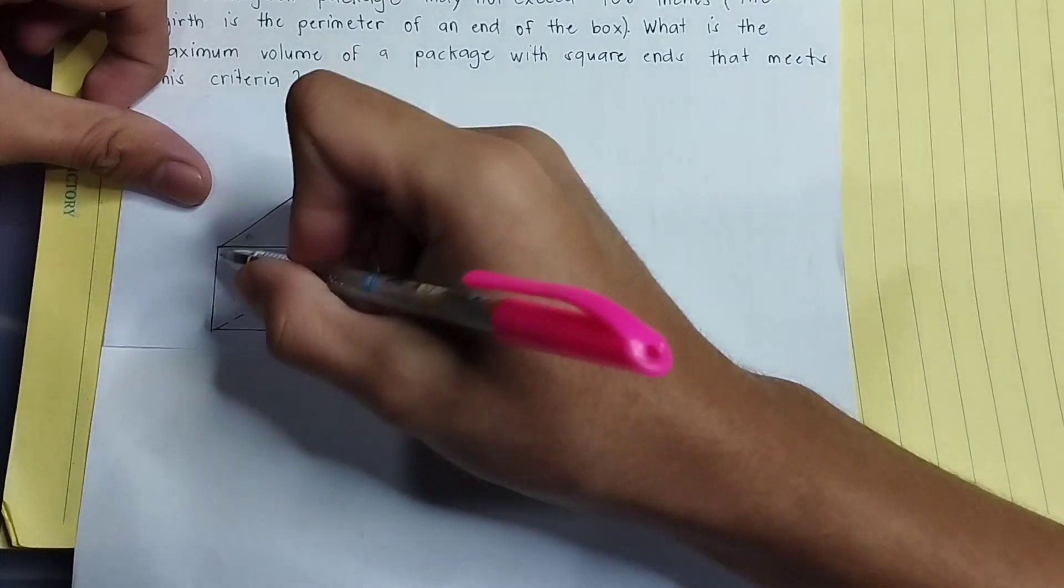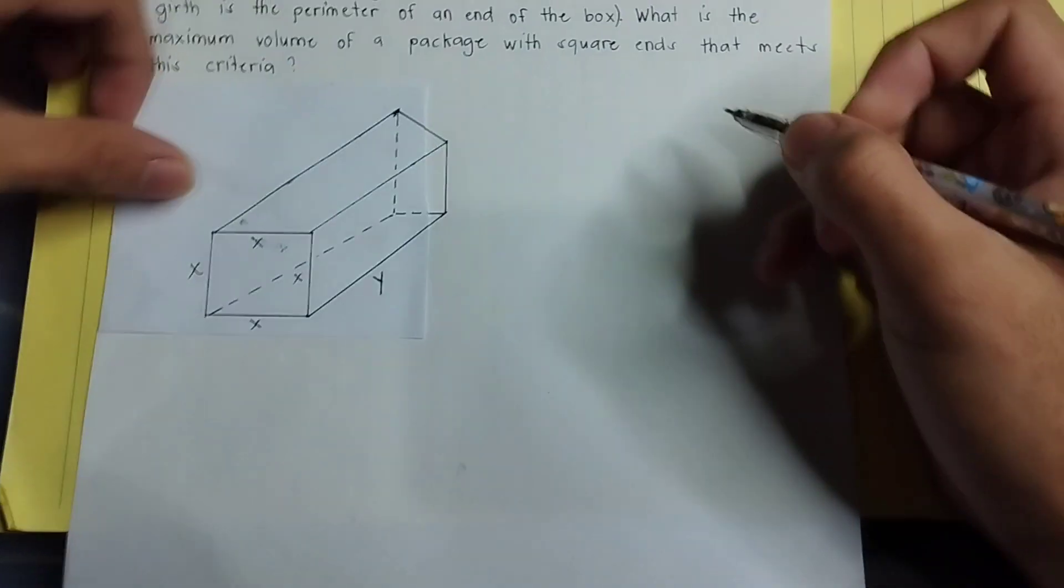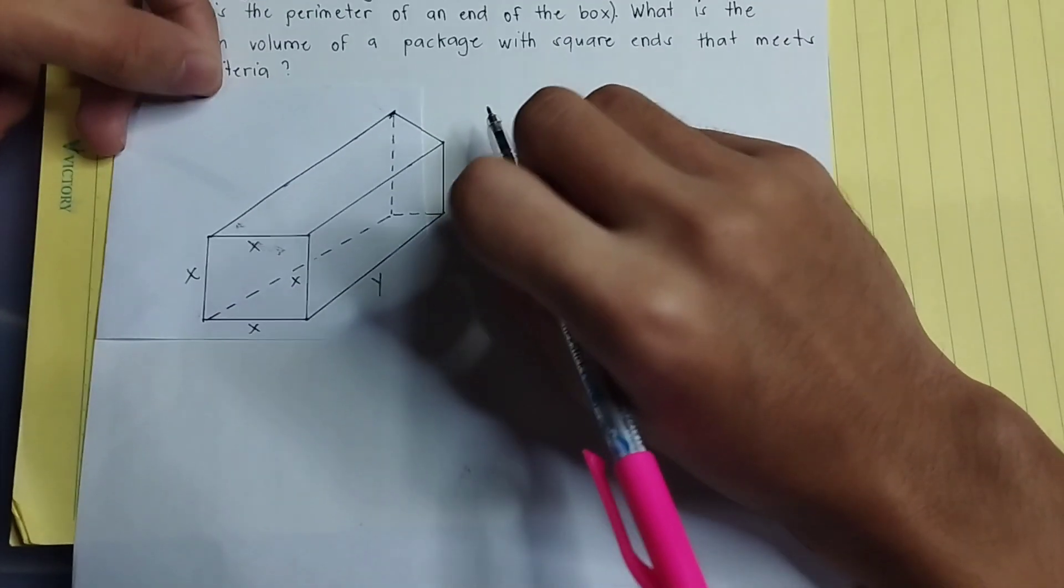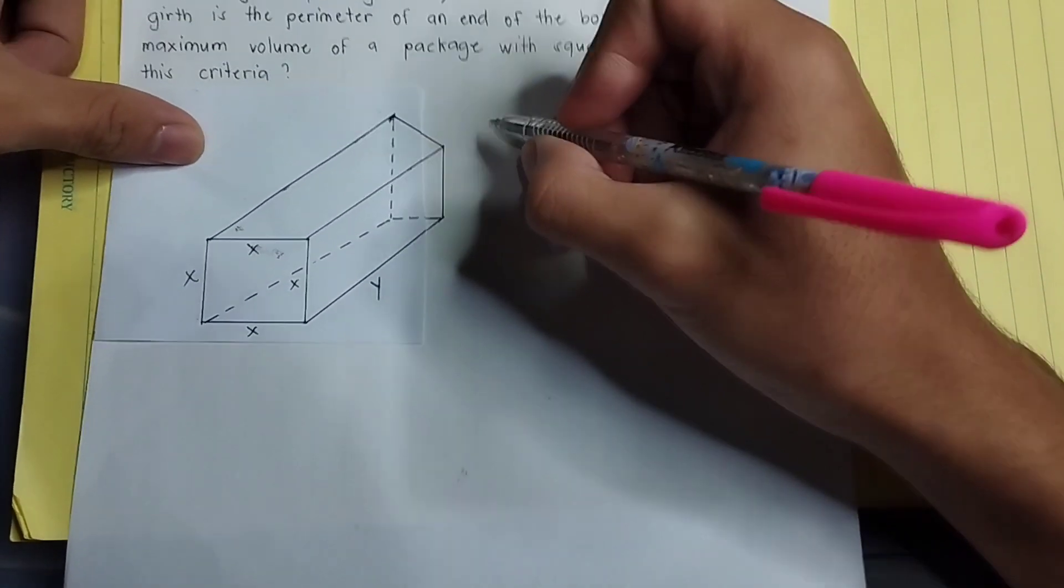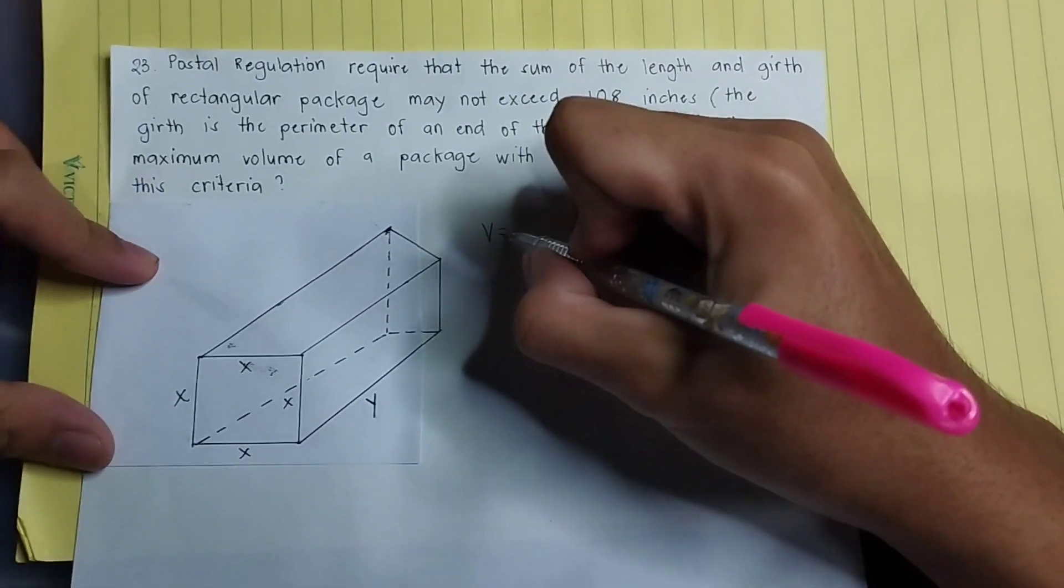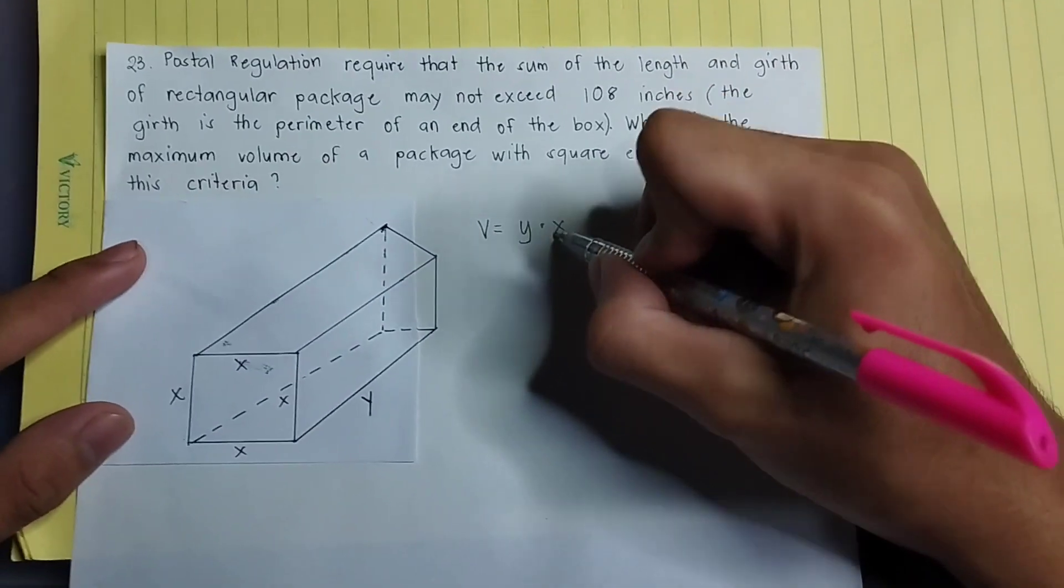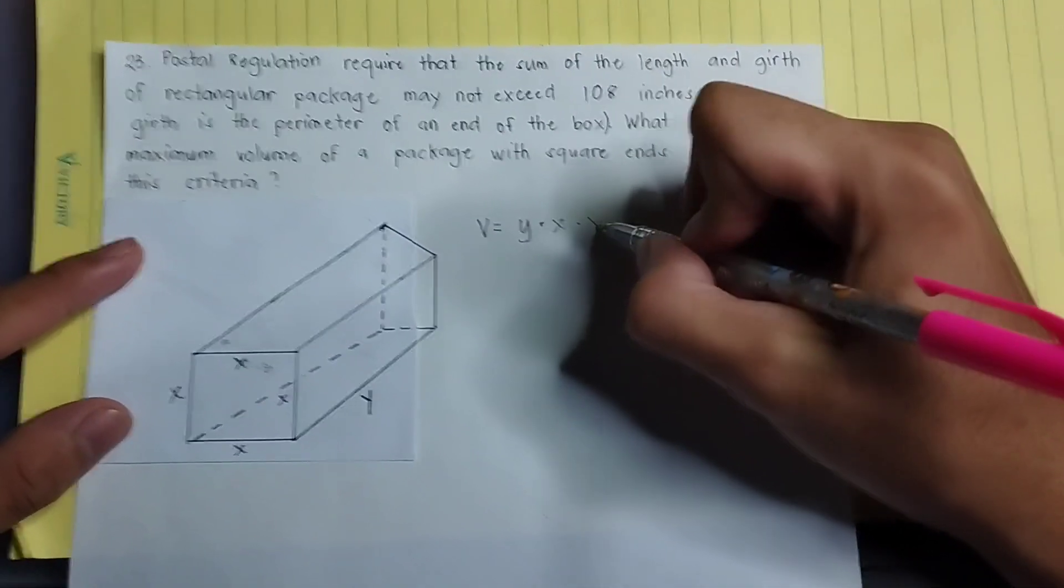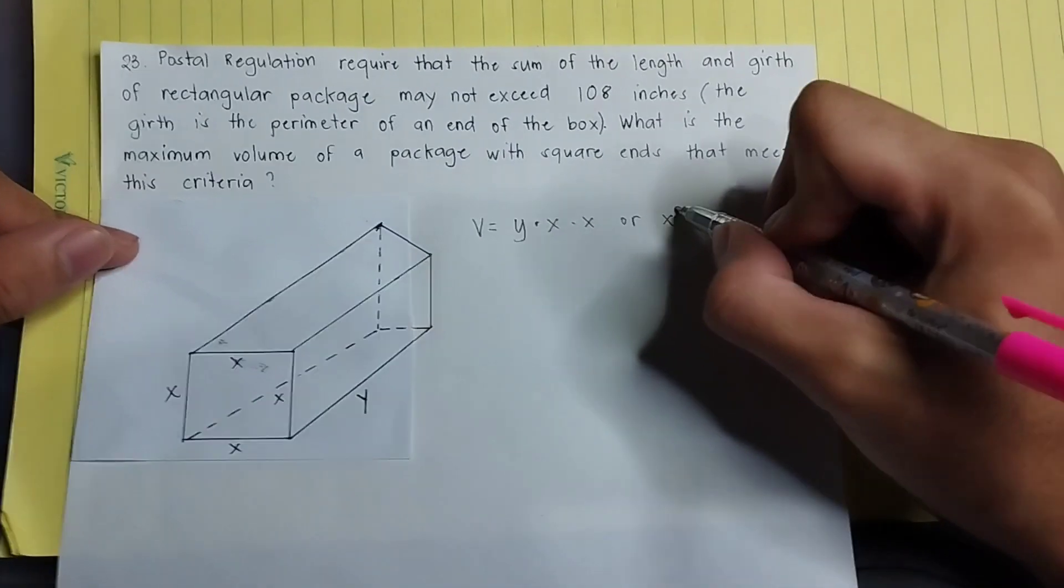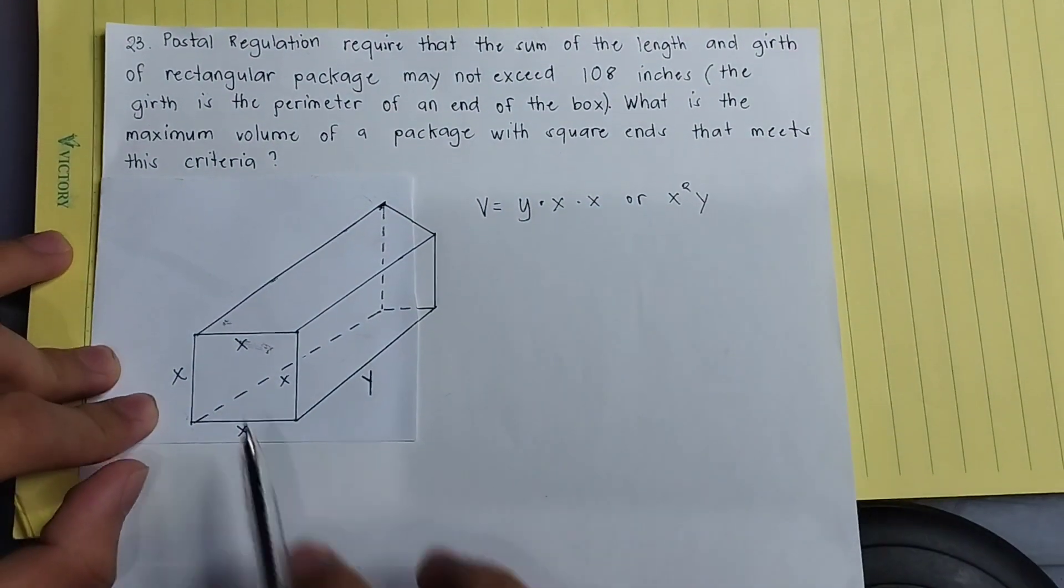So the formula we're going to use, since we are looking for the volume, we're going to use volume equals length (or y) times x width times x height, or x squared y.